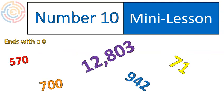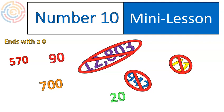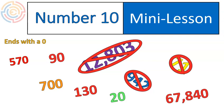Number 10. If it ends with a 0, it is divisible by 10. Looking through some examples: 570 ends in a 0, 700 ends in a 0. Numbers like 942, 12,803, and 71 do not end in 0, so they are out. Numbers like 20, 90, 130, 67,840, 40, and 100 all end in 0 and have a factor of 10. Any number that ends with a 0 has a factor of 10.